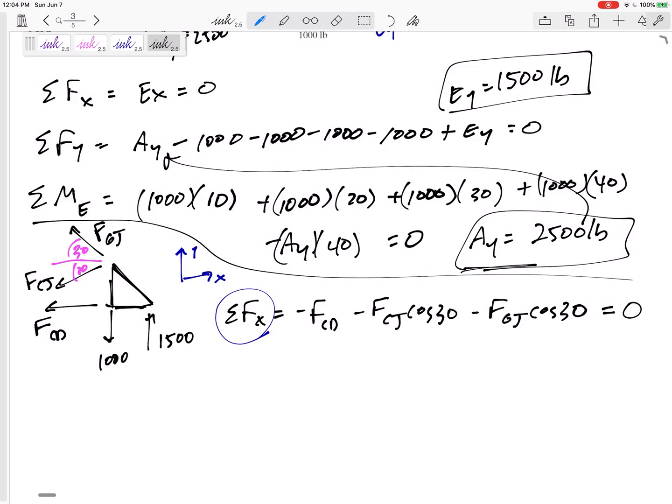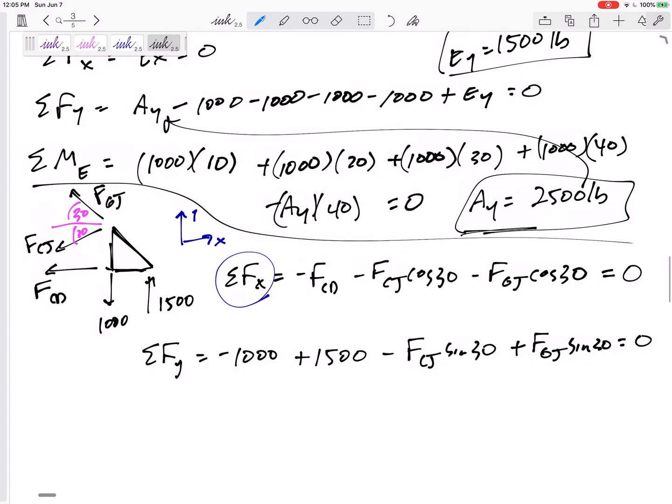Way too many unknowns to solve right away, so now let me sum the forces in the Y direction. Negative 1,000 is pointed down, right? Negative 1,000 and positive 1,500. Then FCJ is down. FCJ sine 30 is down, but FGJ sine 30 is up. And set those equal to zero. But then, you really might want to think about getting into a habit. You might start your equation by summing the moments. Because that's the equation, you've got some choices here. You can sum your moments about particular points.